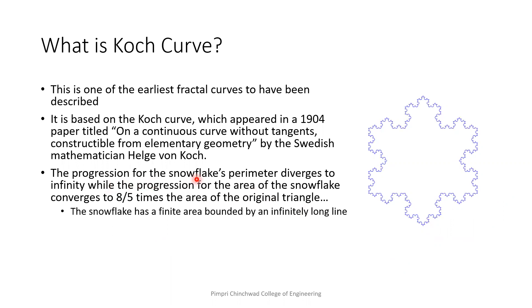While the progression for the area of the snowflake, the area bounded by the snowflake, that converges to 8 by 5 times the area of the original triangle. So we can say basically the snowflake has a finite area bounded by an infinitely long perimeter.